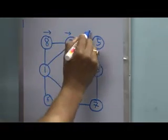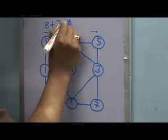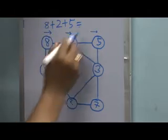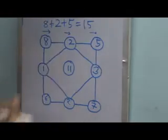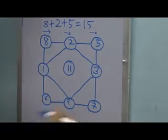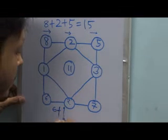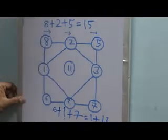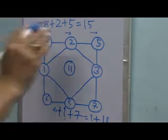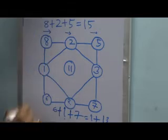Consider the first numbers on the top side - there are three numbers. If we add these three numbers: 8 plus 2 plus 5 equals 15. Now consider just the reverse, the parallel side. If we add all the numbers there: 6 plus question mark plus 7 equals question mark.